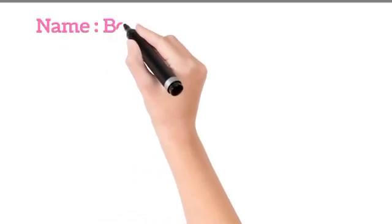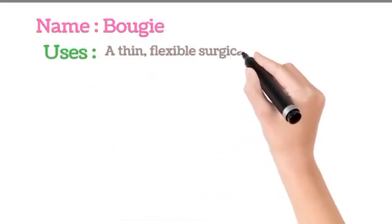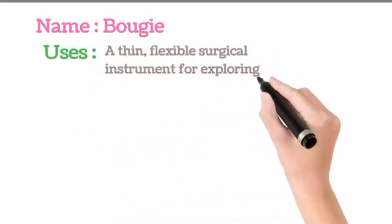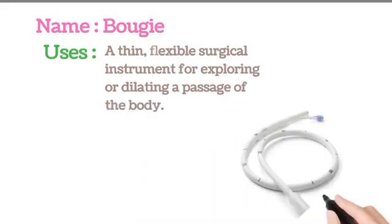Name: Bougie. Uses: A bougie is a thin, flexible surgical instrument used for exploring or dilating a passage of the body.